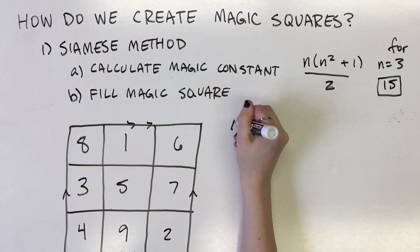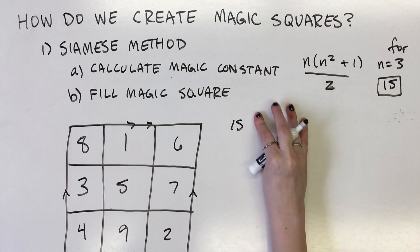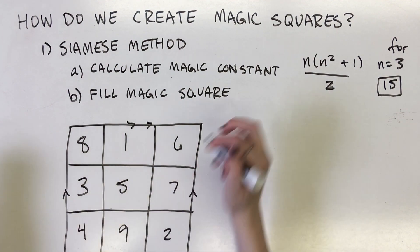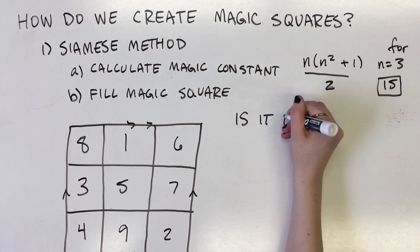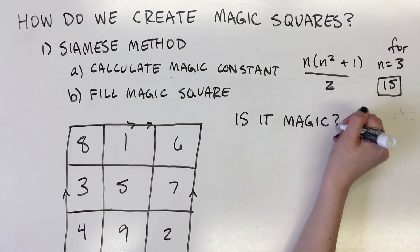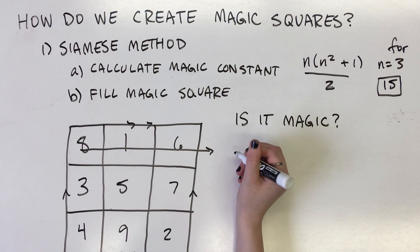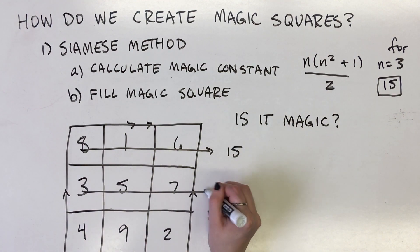Notice that we fill in the magic square as if it were on a toroidal surface. This method will always result in a magic square. The math behind the Siamese method is fairly complex, but the intuition for the Siamese method can be summarized as such.